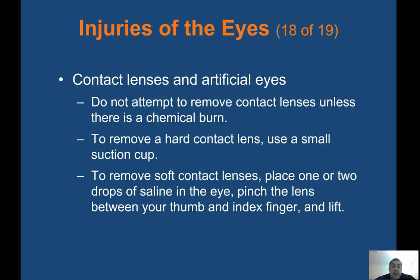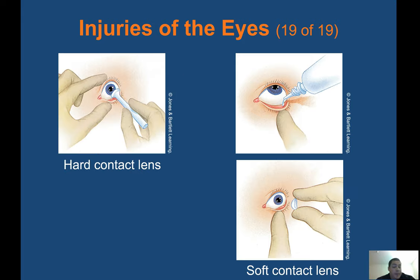Contact lenses and artificial eyes: do not attempt to remove contact lenses unless there is a chemical burn. To remove a hard contact lens, use a small suction cup. To remove soft contact lenses, place one or two drops of saline in the eye, then pinch the lens between your thumb and index finger and lift. If possible, see if you can have the patient remove their own contact lenses so you don't injure the eye further.